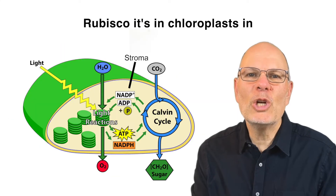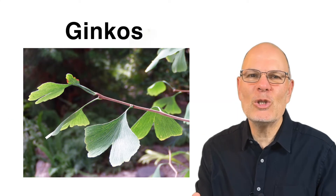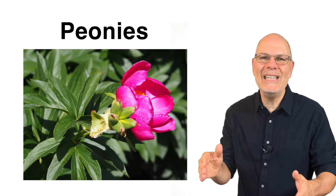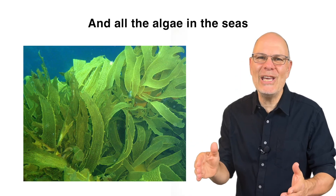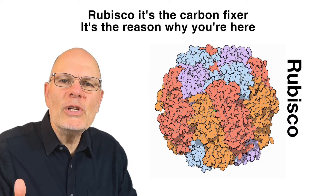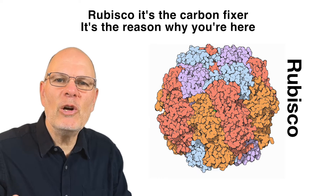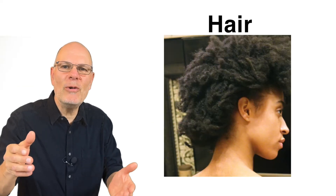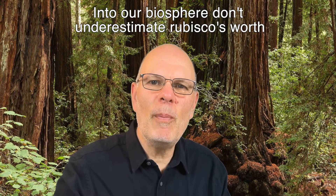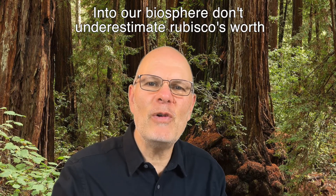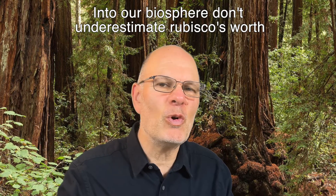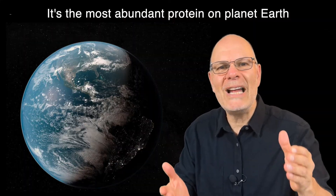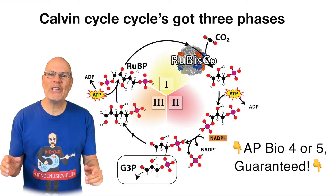Rubisco — it's in chloroplasts in ginkgos, beaches, roses, ferns, pines, peonies, and all the algae in the seas. Rubisco, it's the carbon fixer. It's the reason why you're here — brings the carbon in your ears, toes, hair, and derriere to our biosphere. Don't underestimate Rubisco's worth: it's the most abundant protein on planet Earth.